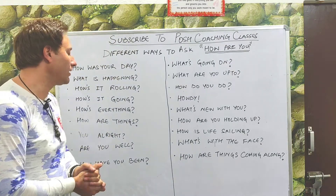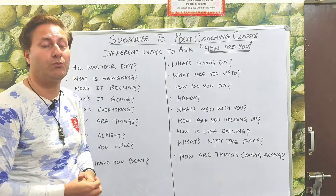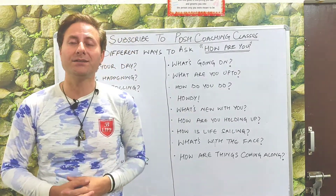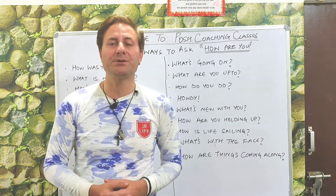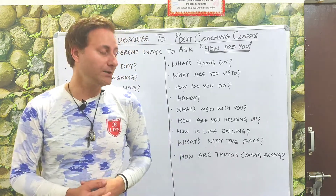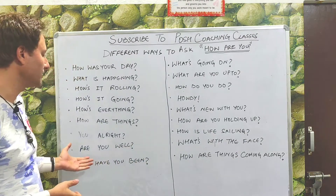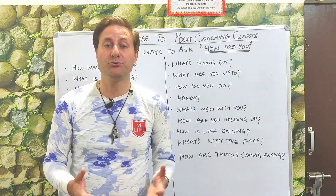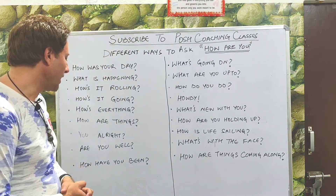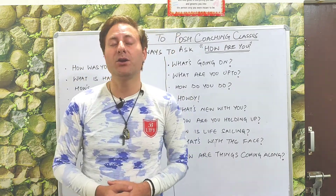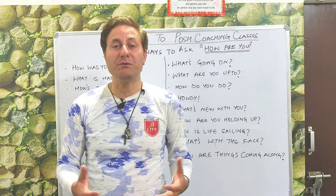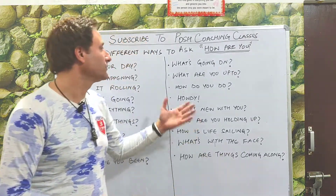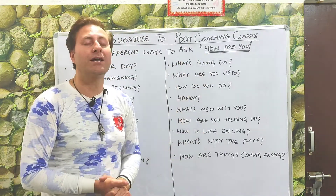After that we have 'How are things?' Then 'You alright?' — this one has a question mark, and it is more of a British way of asking. So you can say 'You alright?' as well. Then 'Are you well?' — if you're meeting someone who wasn't well previously, you can ask 'Are you well?' And 'How have you been?' — just like 'long time no see,' you can say this if you haven't seen someone for a long time.